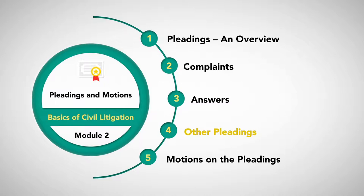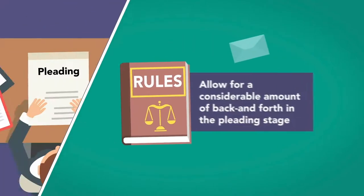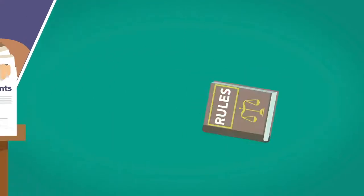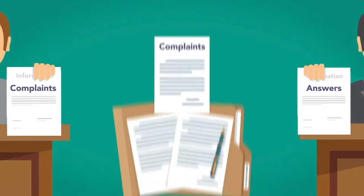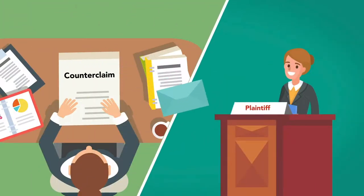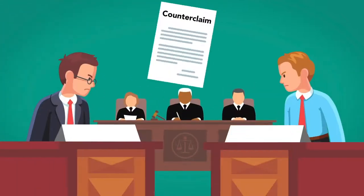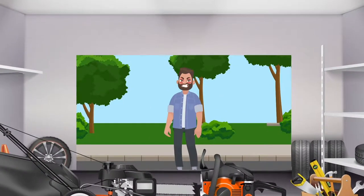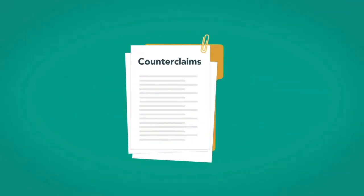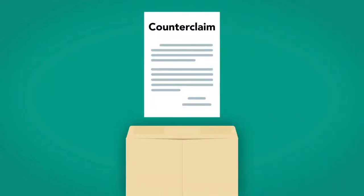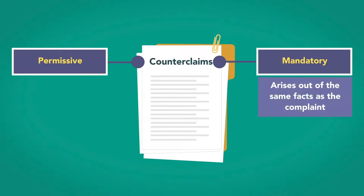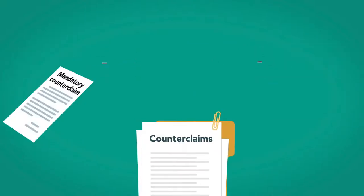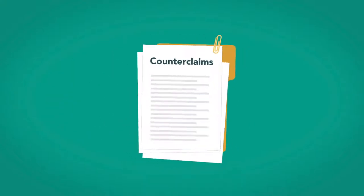Other Pleadings. The rules allow for a considerable amount of back and forth in the pleading stage. These can be categorized as further complaints and further answers as they follow the same format as those initial complaints. A counterclaim is a pleading where the defendant is suing the plaintiff back. In our example, the guy who borrowed the lawnmower may counterclaim against you for trespass if you tried to go get your equipment out of his garage without permission. Counterclaims are usually attached to the initial answer, but they can be filed later if new facts come to light. Counterclaims are either mandatory or permissive. A mandatory counterclaim is one that arises out of the same facts as the complaint — it must be filed with the answer or it's lost. Any other counterclaim is permissive.